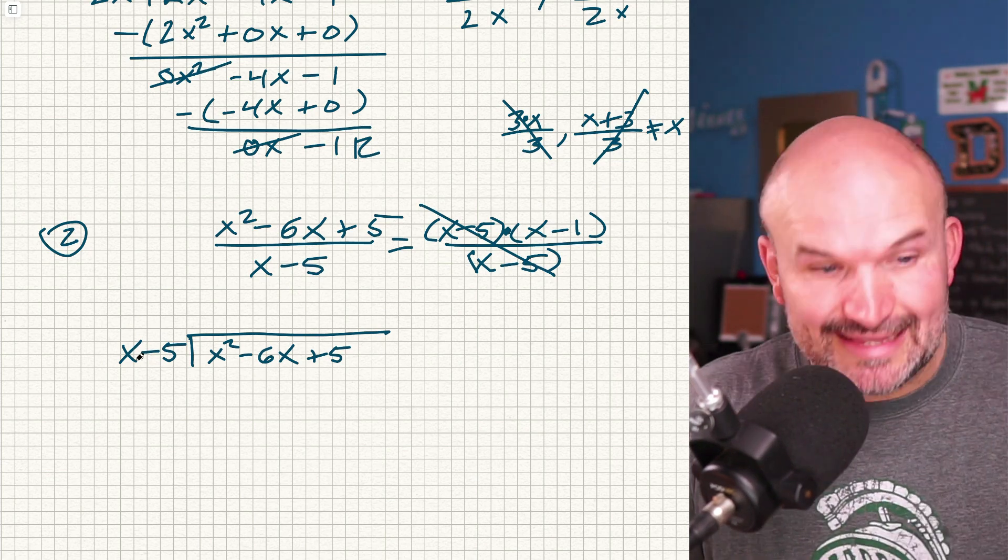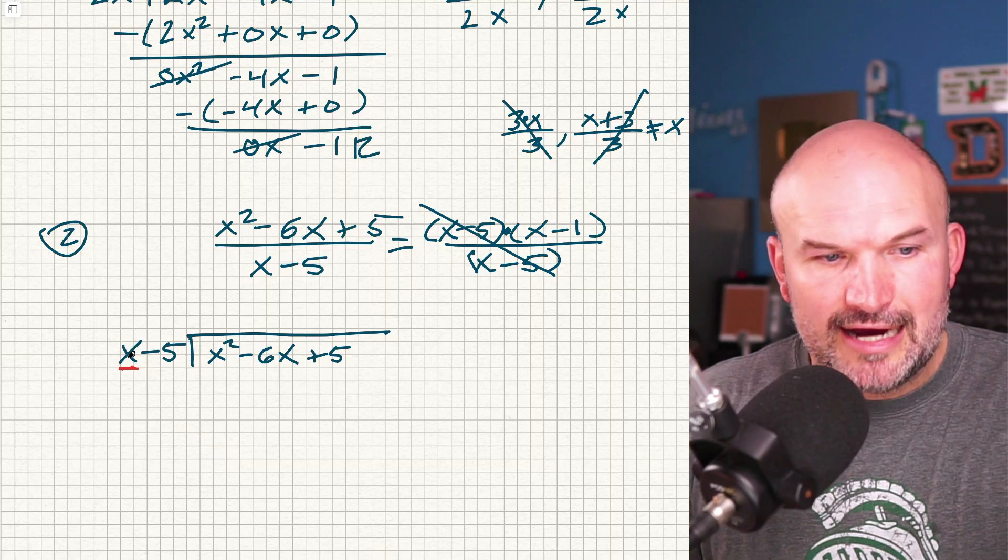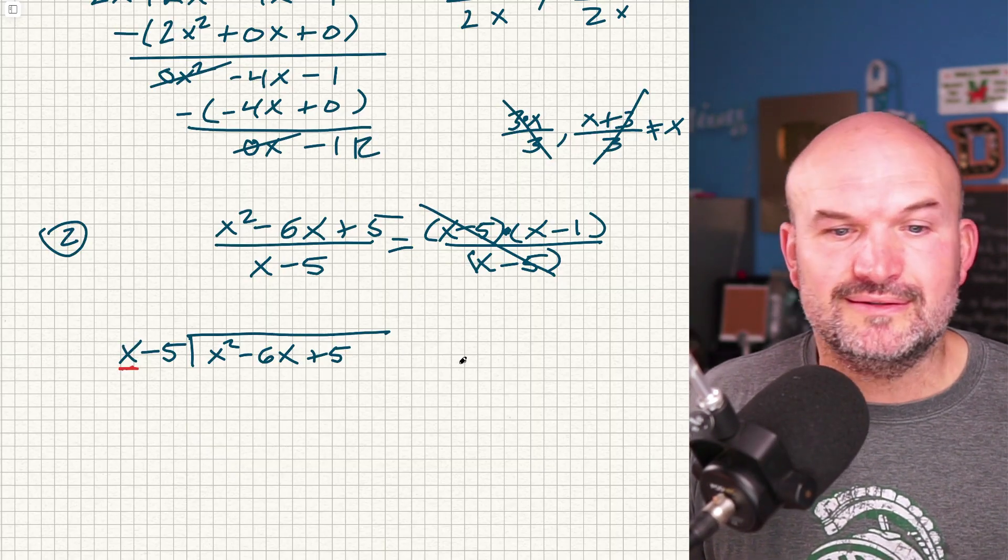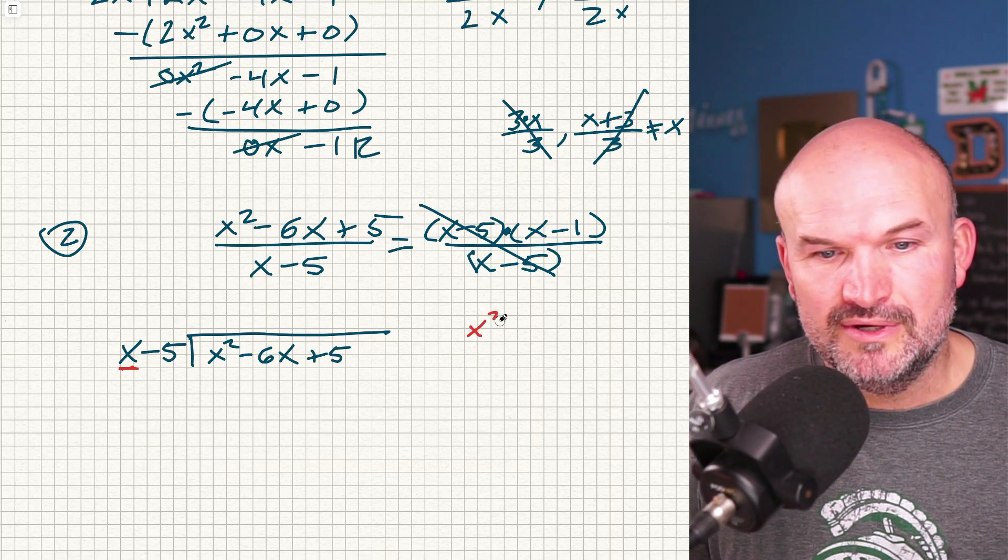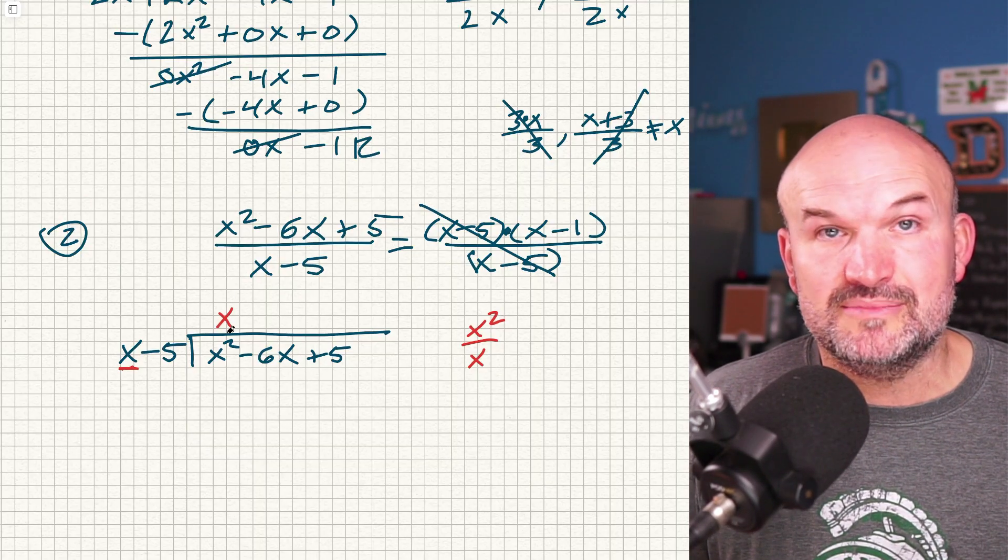So when I am doing this, what I'm going to do is I'm only going to divide the first term of my divisor. How many times does x go into x squared? Again, if it's confusing to you, just write it out over here. How many times does x go into x squared? Oh, that's going to be x times.